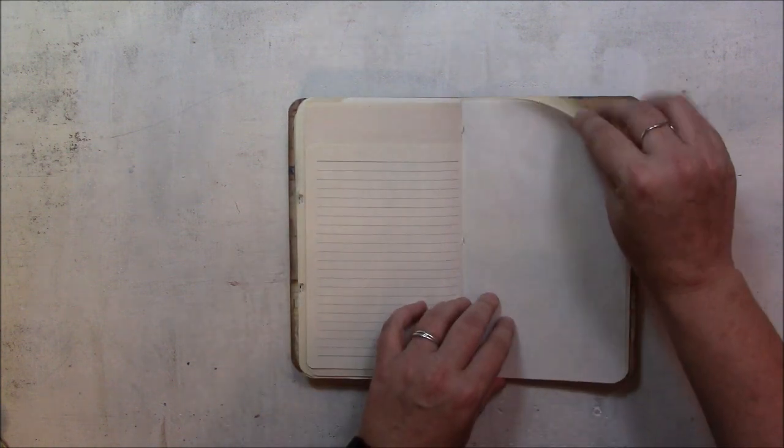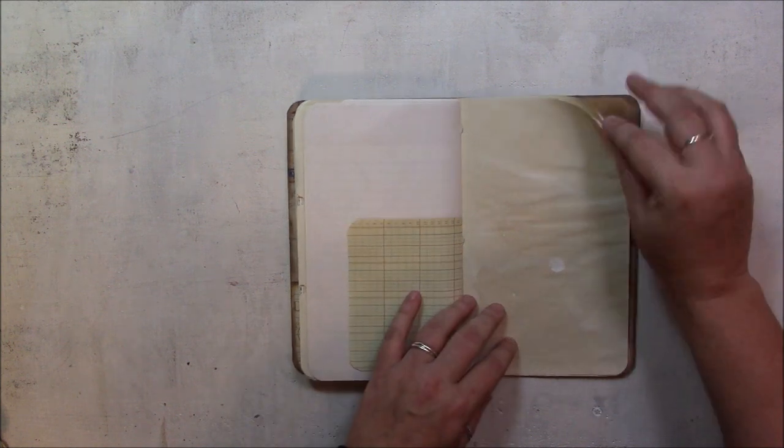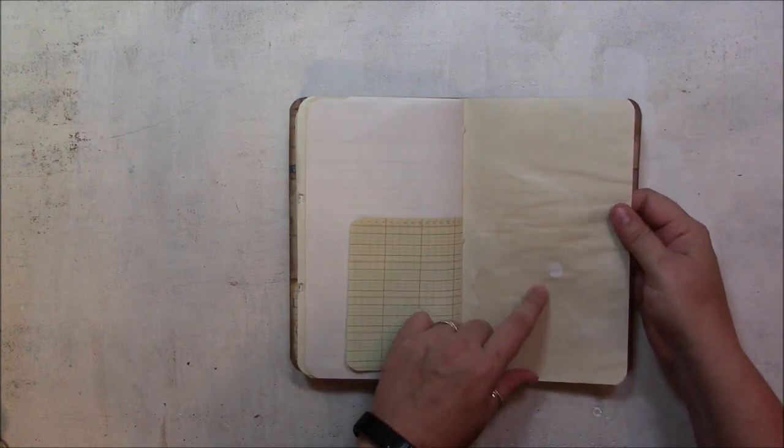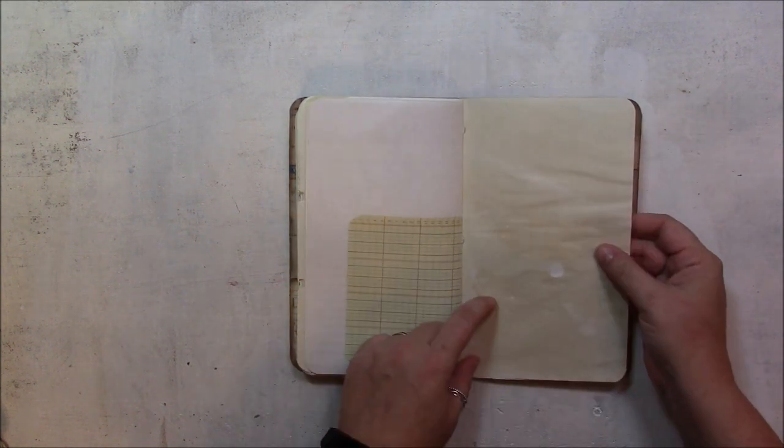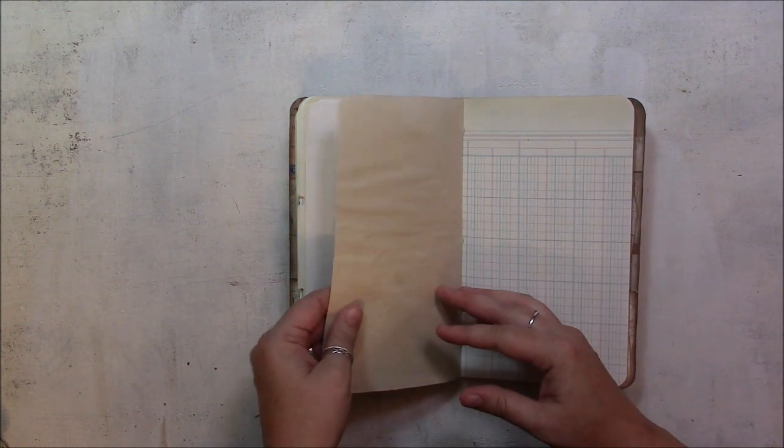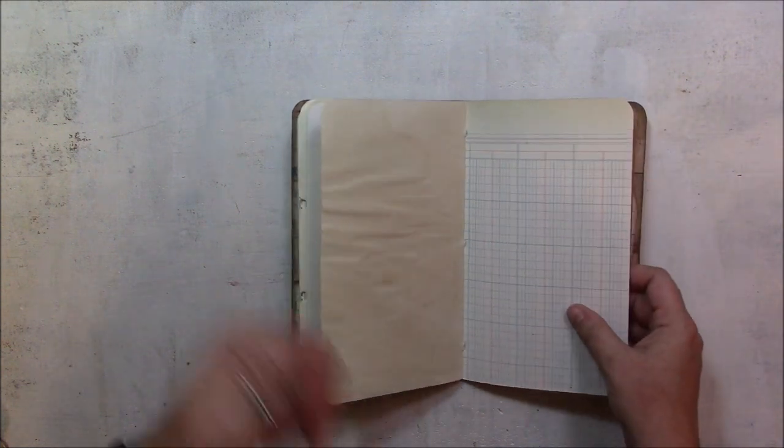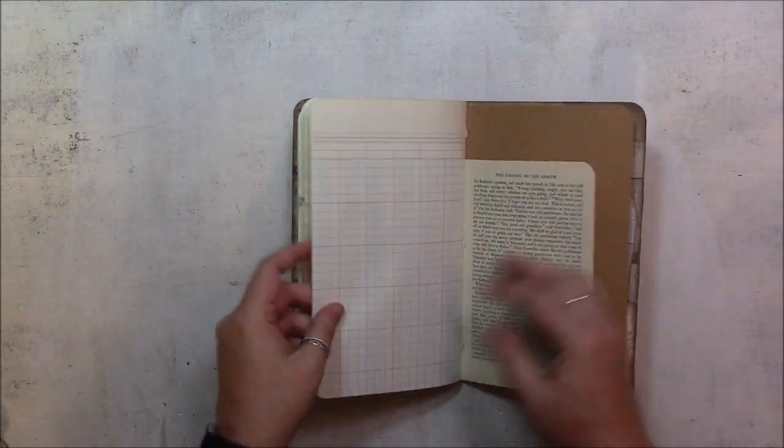Lined paper. Blank paper. More ledger paper. And this is some coffee dyed, probably typing paper. It always feels so much different once you coffee dye it that it's hard to tell what the paper was originally. But it's probably just copy paper, like you would put in your printer or copy machine.